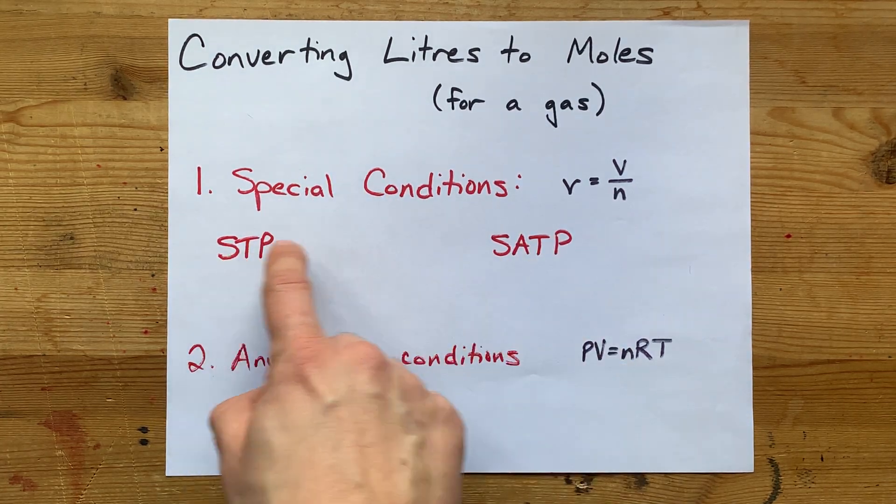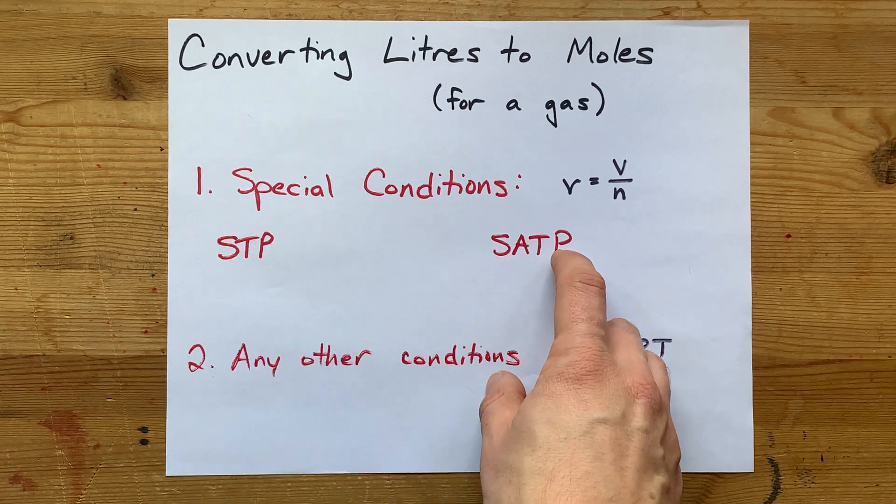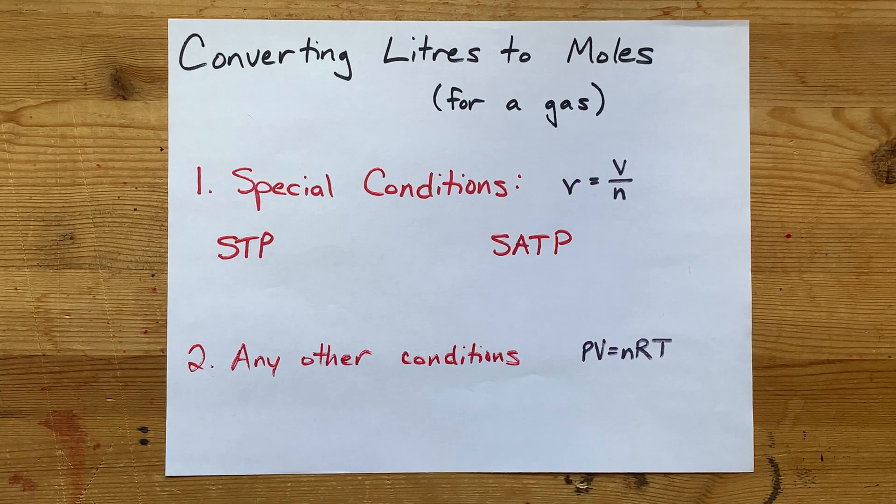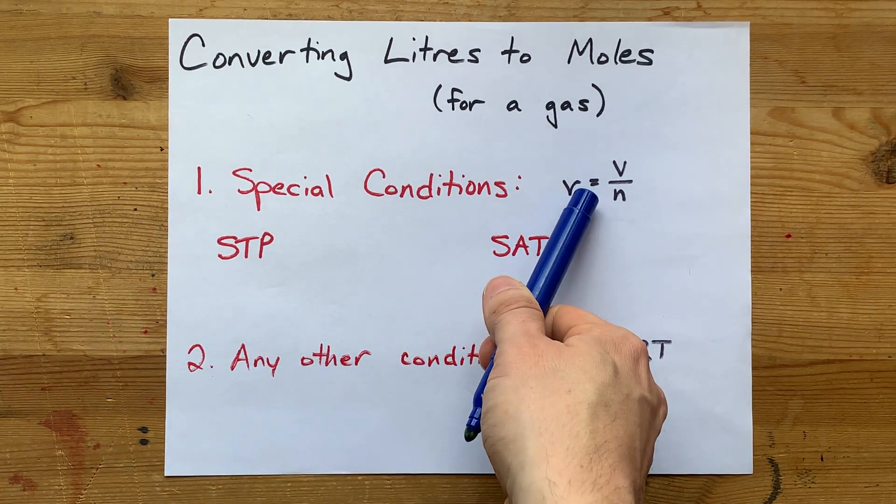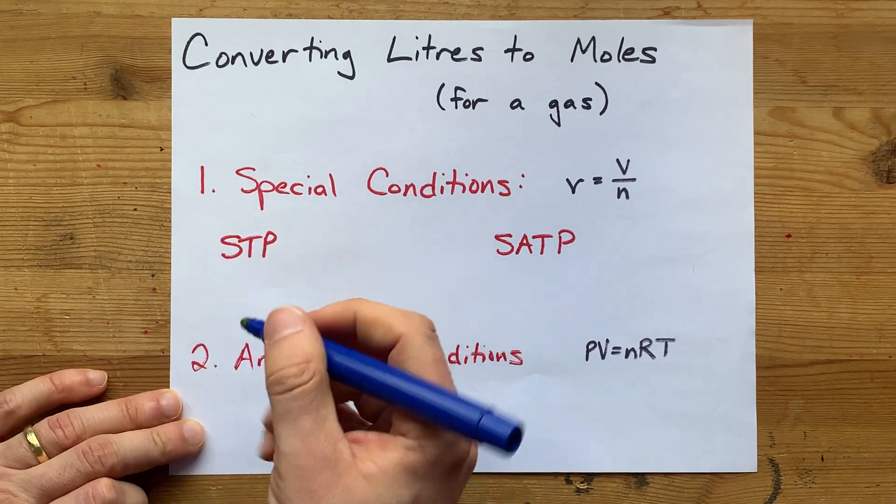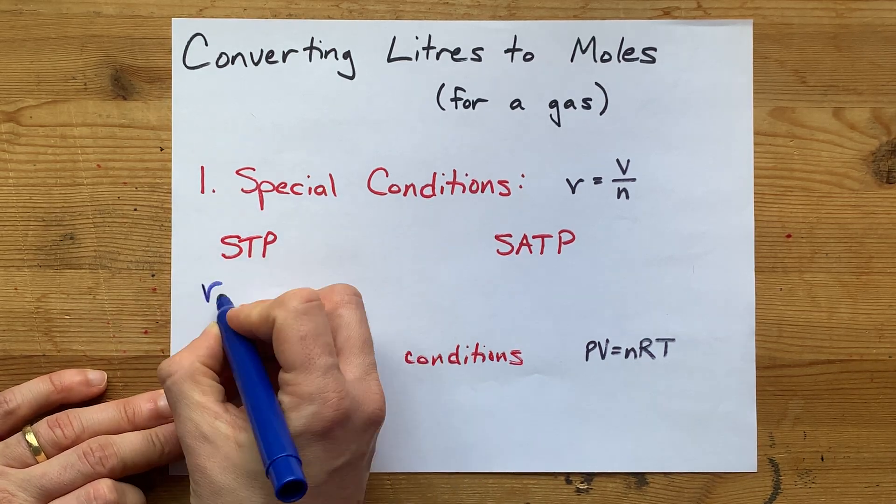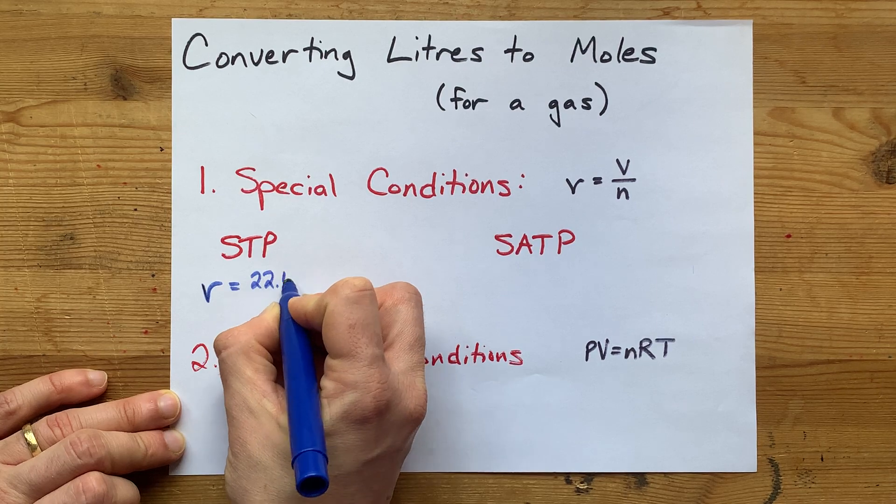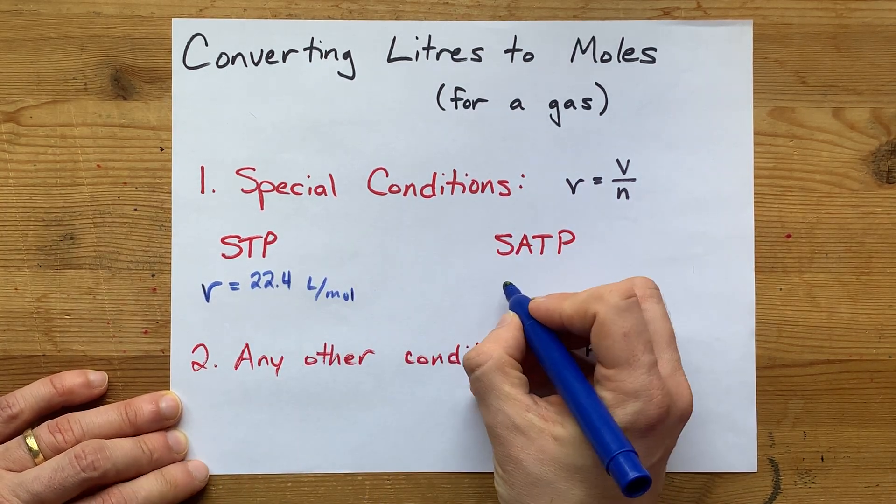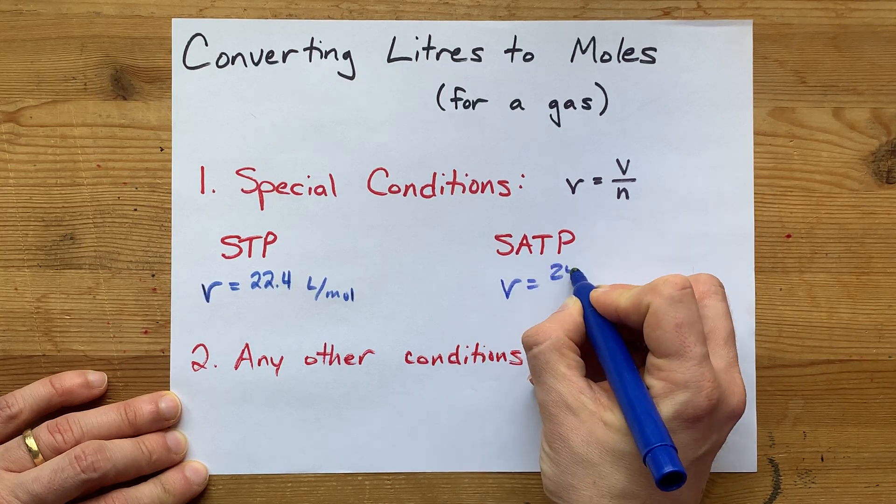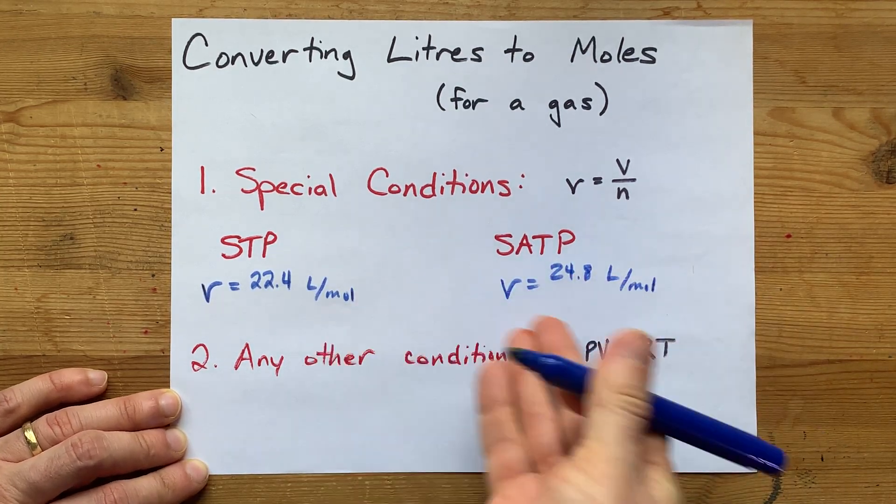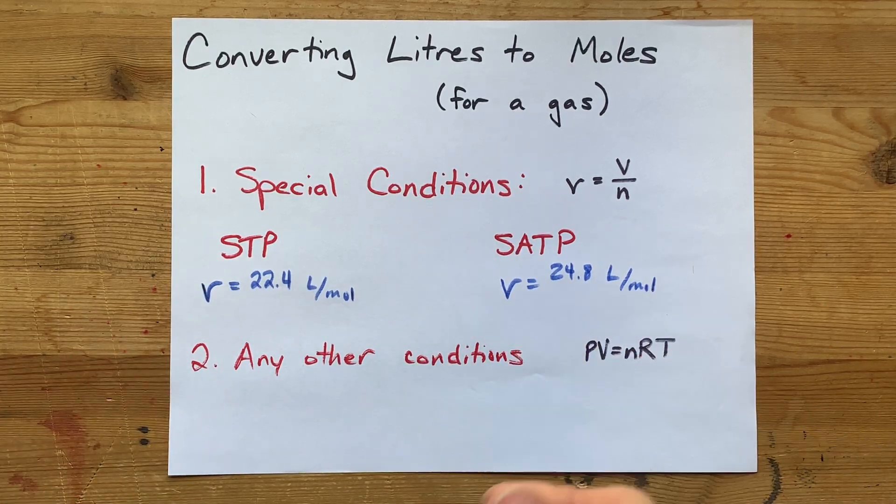If you have either of these special conditions, you can use this formula. The molar volume, which is a constant, equals volume divided by moles: v = V/n. For STP, that molar volume constant is 22.4 liters per mole. For SATP, it's 24.8 liters per mole. You might be given that or have to memorize it.